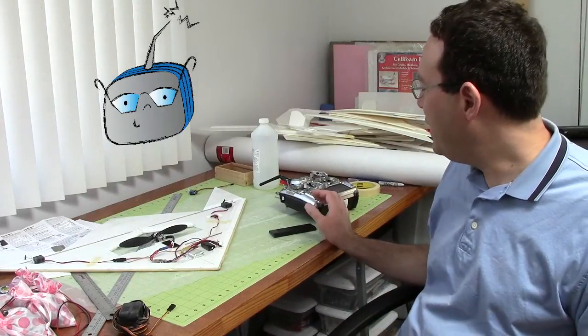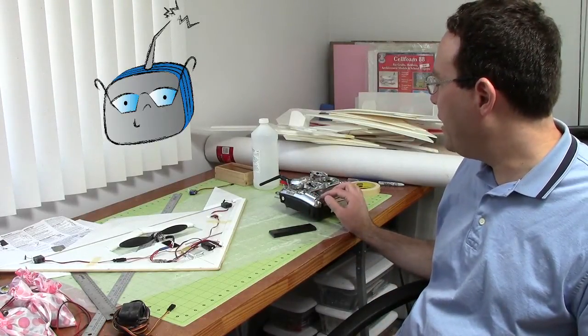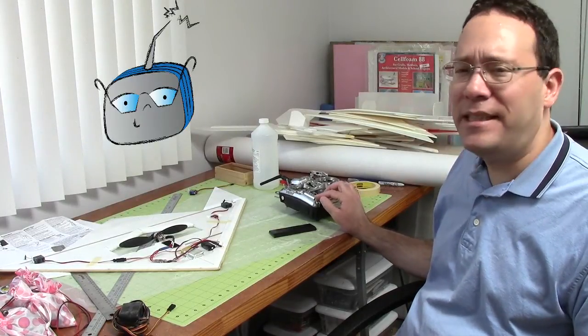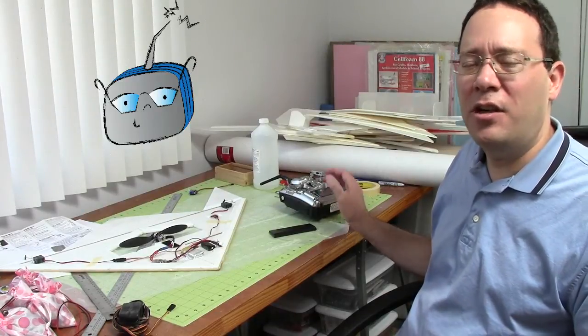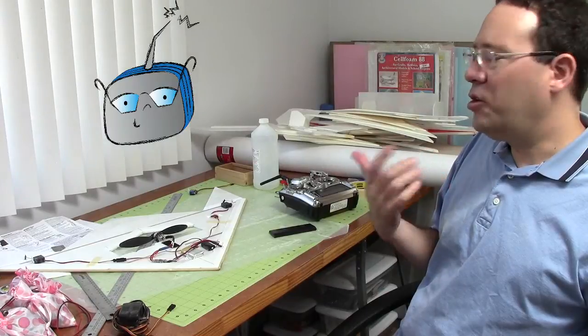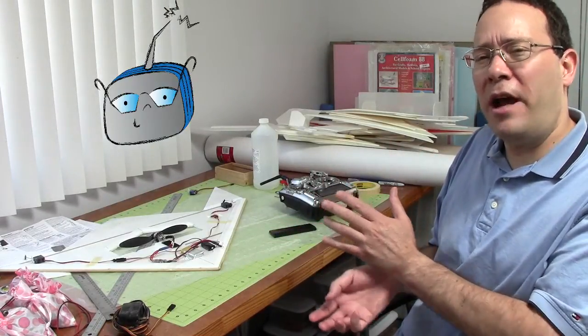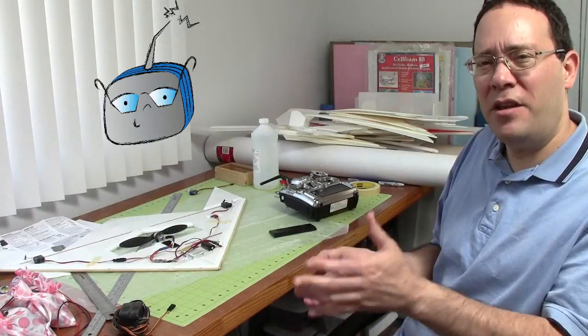The other thing with this lithium iron phosphate is that they last a lot longer than lithium polymer. You can expect maybe four times as many cycles. Lithium polymer, generally speaking, people say that they're good for 500 cycles. That's when you're probably going to be down to 80% of the original capacity.